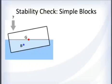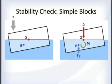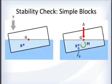The block tips over. The center of gravity does not change, but the center of buoyancy does, because it corresponds to the center of the underwater volume. The center of buoyancy has shifted, and now applying the weight and buoyant force creates a moment — it is no longer in static equilibrium.